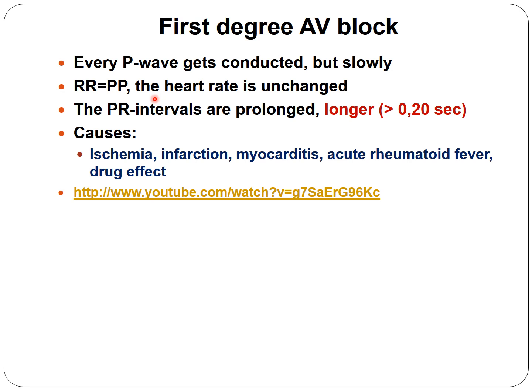Another factor that alters the PR interval is age. In elderly patients, the PR is usually longer than in younger ones. The 1st degree AV block can be caused mainly by ischemia, infarction, myocarditis, rheumatoid arthritis, fever, and various drugs.